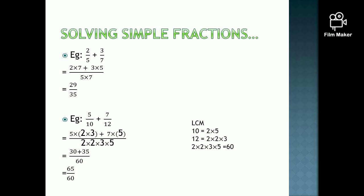Now simplify. 2 into 7 is 14, and 3 into 5 is 15. If you simplify this, you will be getting the answer as 29 over 35 — since the denominator is 5 into 7, which is 35. Hopefully you understood this concept.